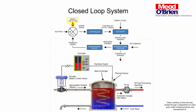Error detector compares the set point to the feedback signal and produces an output proportional to the difference between them. Error signal is the output of the error detector. If the feedback signal and set point are equal, the error signal is zero.